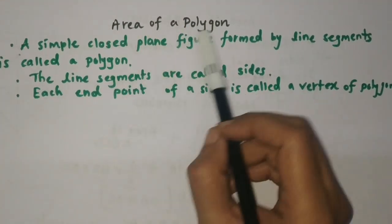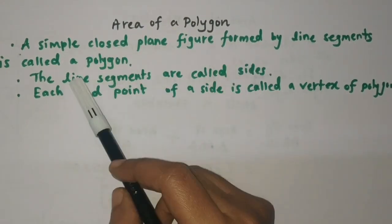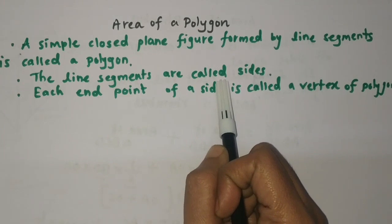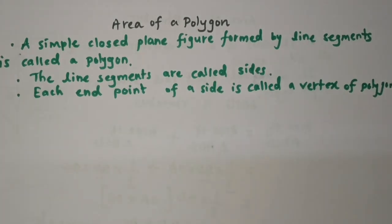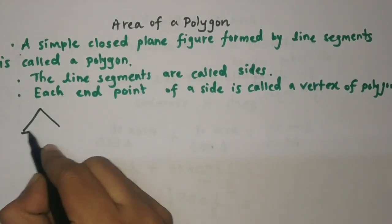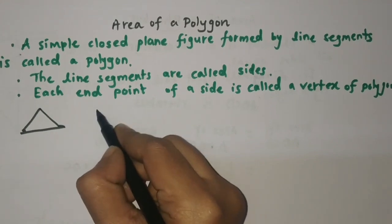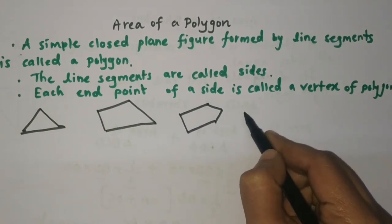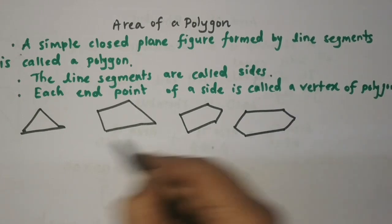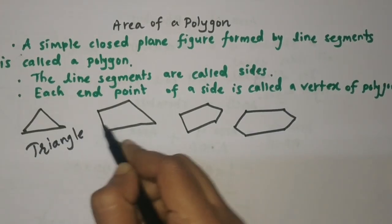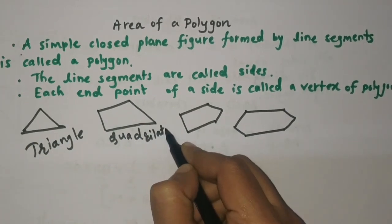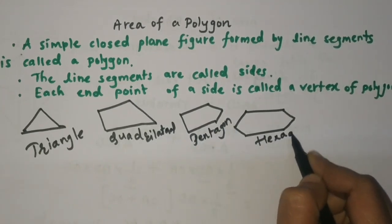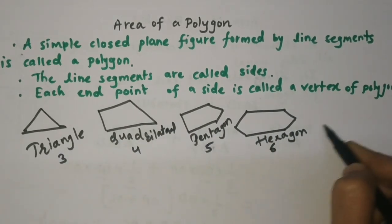Now, area of a polygon. A polygon is a simple closed plane figure formed by line segments. 'Poly' means many and 'gon' means sides. Each endpoint of a side is called a vertex. We can have a triangle (3 sides), a quadrilateral (4 sides), a pentagon (5 sides), and a hexagon (6 sides).